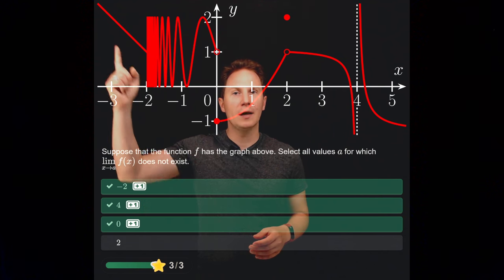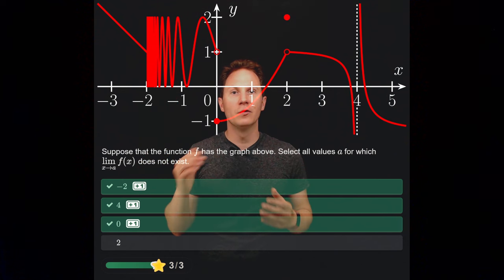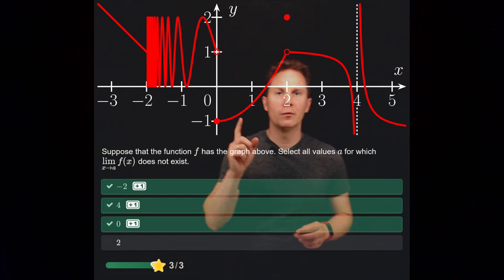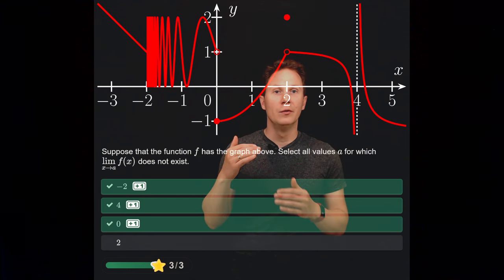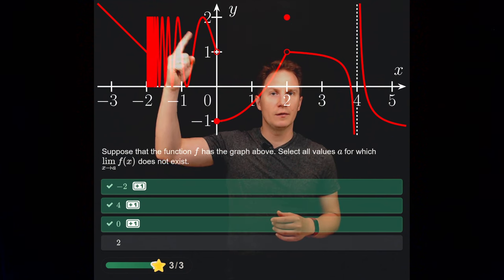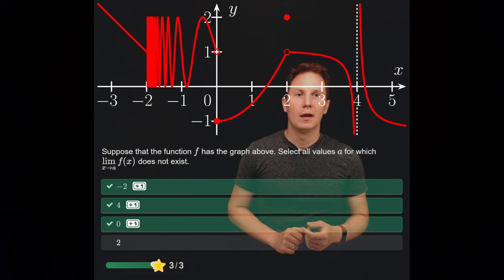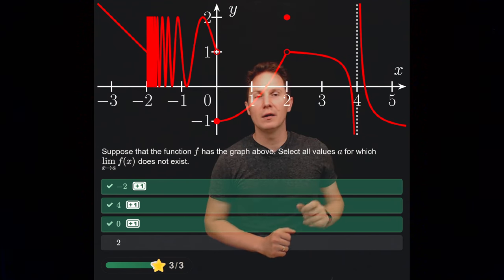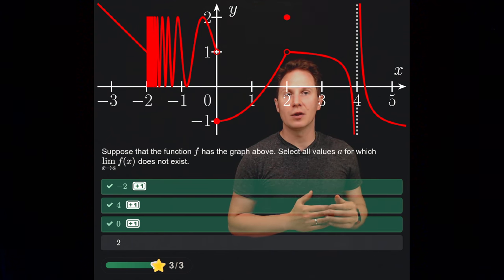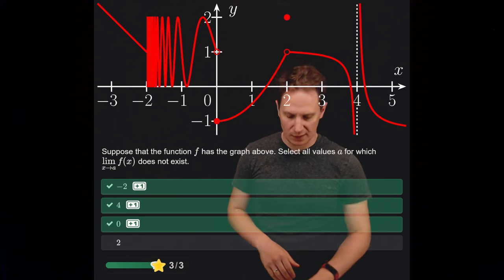At negative 2, the left-hand limit does exist but the right-hand limit does not — the function wildly oscillates around that point. At x equals 0, we see non-matching one-sided limits: the left-hand limit is positive 1 and the right-hand limit is negative 1. For x equals 4, the function is unbounded around that point, hence the limit does not exist.